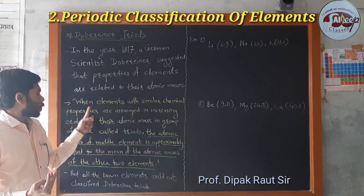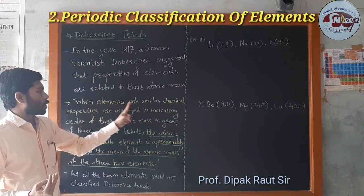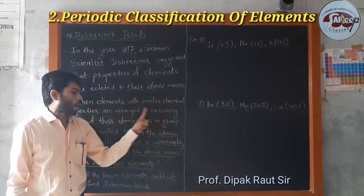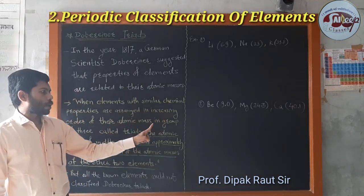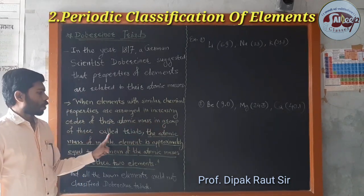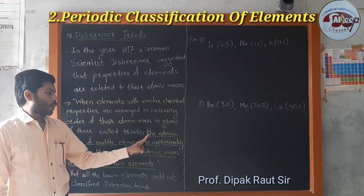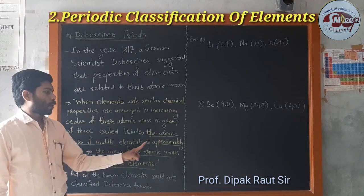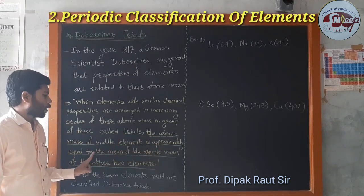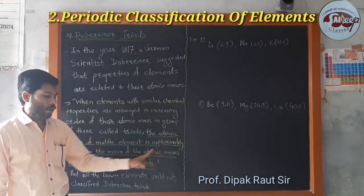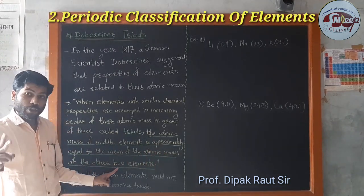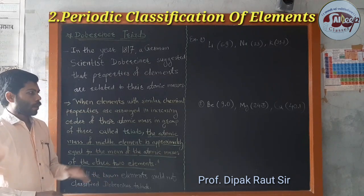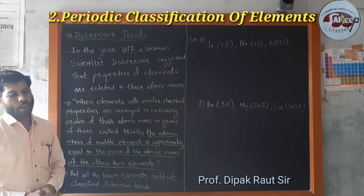To revise the full law: when elements with similar chemical properties are aligned in increasing order of their atomic mass in a group of three called Triads, the atomic mass of the middle element is approximately equal to the mean of the atomic masses of the other two elements. These are the laws of Dobereiner's Triads.